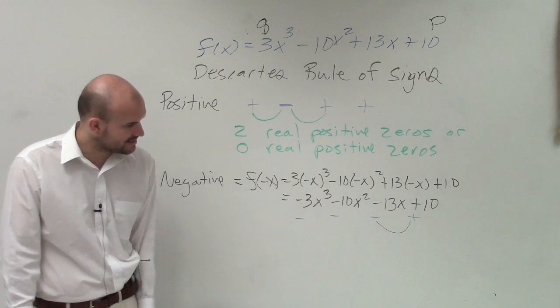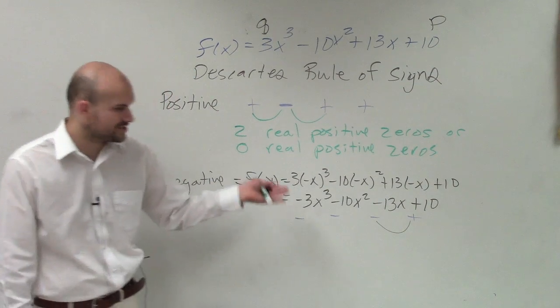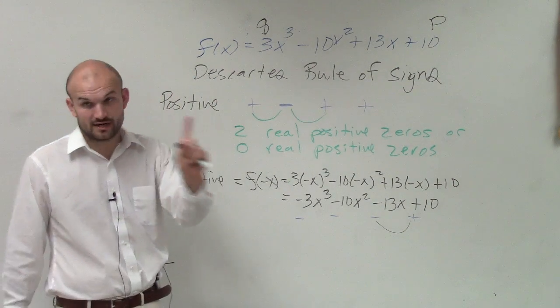Now when we're looking at this, you can see there's one change in signs. Therefore there's one negative real zero.